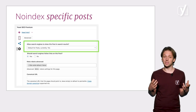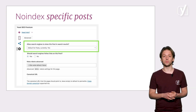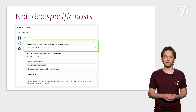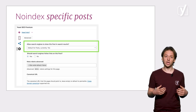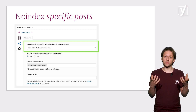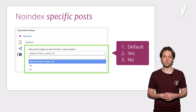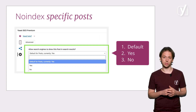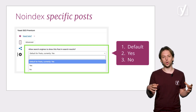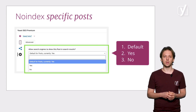Well, yes, of course you can. To do this, go to the Advanced tab of the Yoast SEO meta box beneath your post. Here, you have the same option we discussed earlier, only now this applies to only that specific post. The only difference is that here you have a third option, which is to always follow the default setting you set earlier.